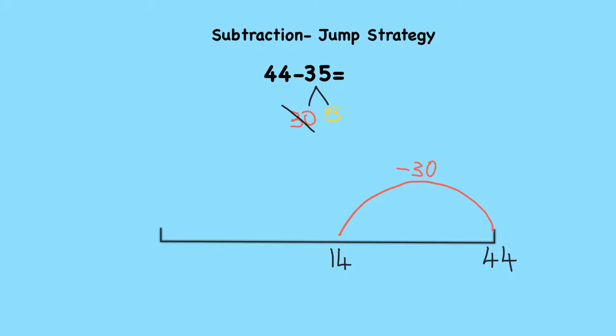Now I need to take 5 away from 14. I think I could break 5 up into a more manageable group of numbers. I could split 5 up into 4 and 1, because 4 plus 1 is 5. If I take 4 from 14, I'm going to get a nice round number. Let's have a look.